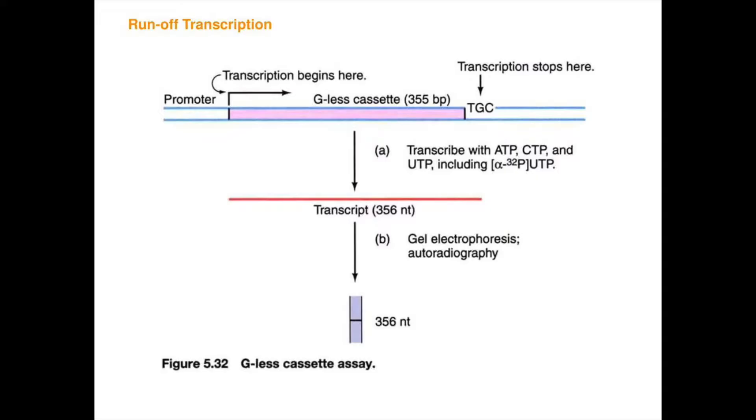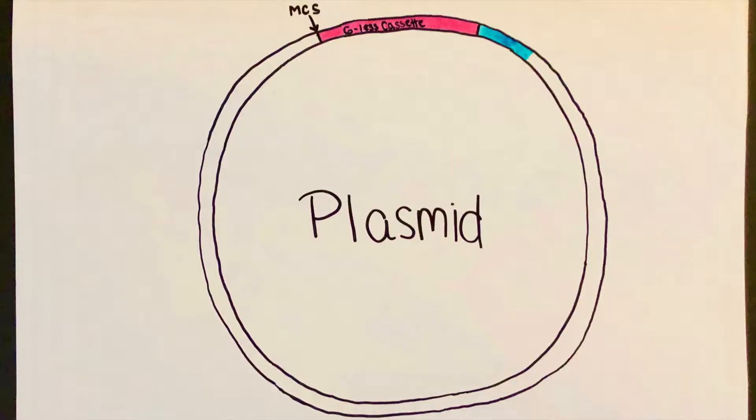You might be wondering, why is it called a G-less Cassette? Well, in this assay, a long stretch of nucleotides that make up the G-less Cassette lack guanine, hence the G. As you can see on our image, the DNA in this plasmid is double-stranded. On the top strand, there is no guanine in the long stretch of nucleotides. Therefore, the bottom strand lacks cytosine, the C-nucleotide you may be familiar with.